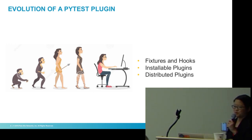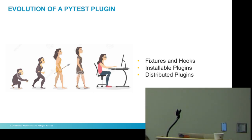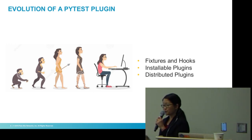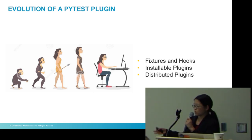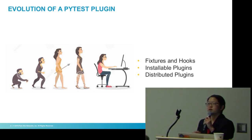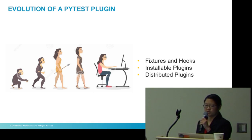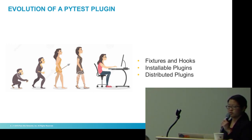How do you go about writing your PyTest plugin? I think of it as an evolutionary process where you start with fixtures and hooks, then create a locally installable plugin, and finally a distributed plugin. The locally installable plugin allows you to share it within your organization across different projects and code bases. Distributed would be more like having it on PyPI so everybody in the world can use it. Today I'll cover fixtures and hooks, local plugins, and locally installable plugins.